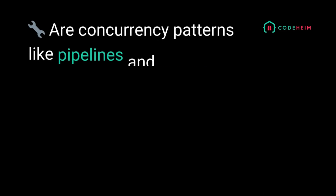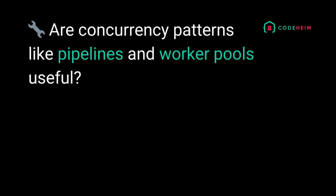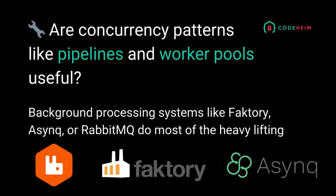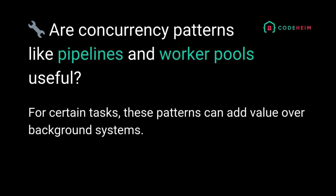Another important question: are concurrency patterns like pipelines and worker pools useful? These patterns are powerful tools, but do you always need to build them yourself? Not necessarily. If you're using background processing systems like Faktory, Async, or RabbitMQ, a lot of the heavy lifting is already done for you. These tools provide built-in job queues, retries, scheduling, and even worker management. In many web applications, especially early on, these systems are more than enough to handle background tasks without needing custom concurrency logic.